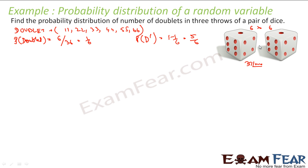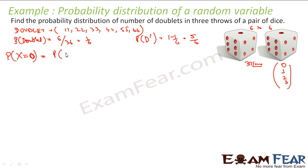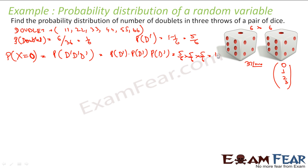Since we are throwing it three times, it may happen that we get a doublet zero times, one time, two times, or three times. For P(X=0), that means you don't get any doublet - you are looking for probability of no doublet in any throw. Since they are all independent events, this is 5/6 × 5/6 × 5/6, which is 125/216.